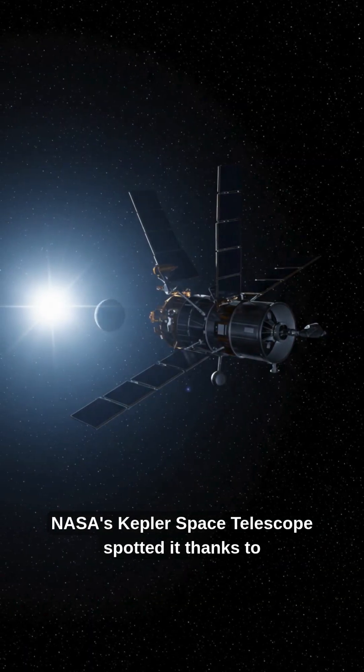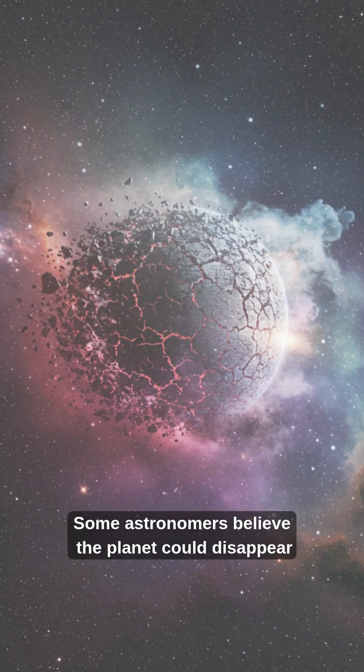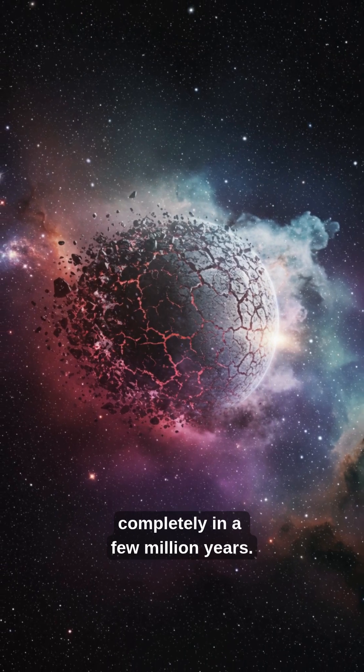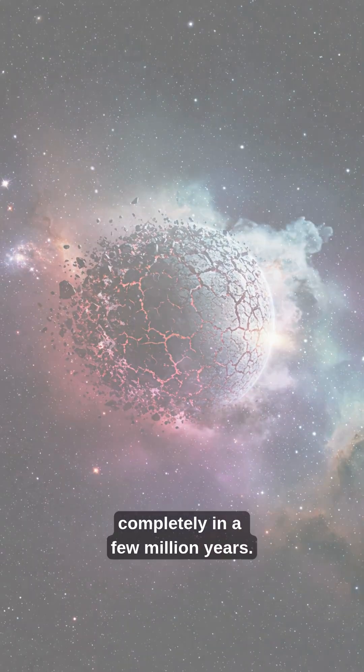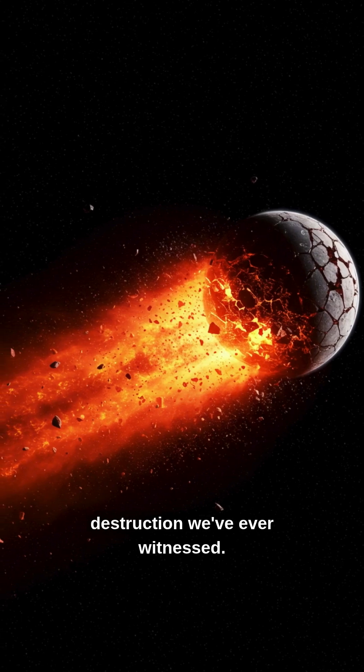NASA's Kepler Space Telescope spotted it thanks to these unpredictable dips in light. Some astronomers believe the planet could disappear completely in a few million years. It's one of the most extreme examples of planetary destruction we've ever witnessed.